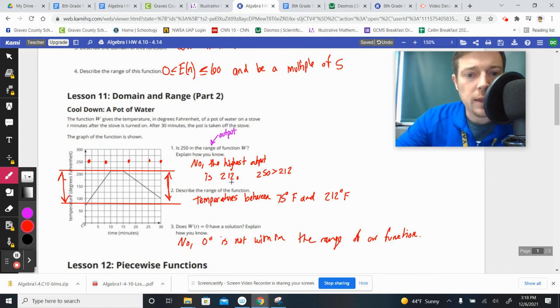and anything outside of that range is not part of our function as output. And so that's why we can't have numbers like 250 or 0 be part of our output, because they're not demonstrated on our graph of our function. All right, later, guys.